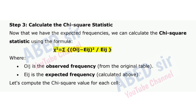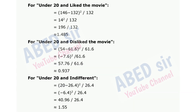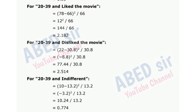Let's compute the chi-square value for each cell. For under 20 and liked the movie: 1.485. For under 20 and disliked the movie: 0.937. For under 20 and indifferent: 1.55. For 20 to 39 and liked the movie: 2.182. For 20 to 39 and disliked the movie: 2.514. For 20 to 39 and indifferent: 0.774.